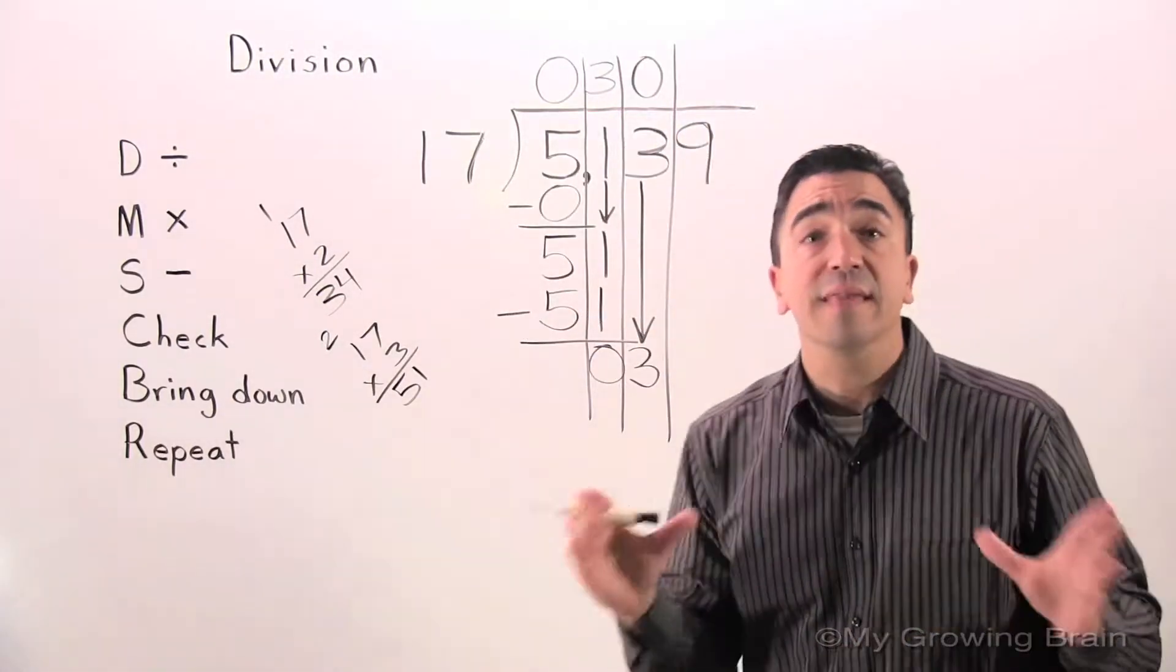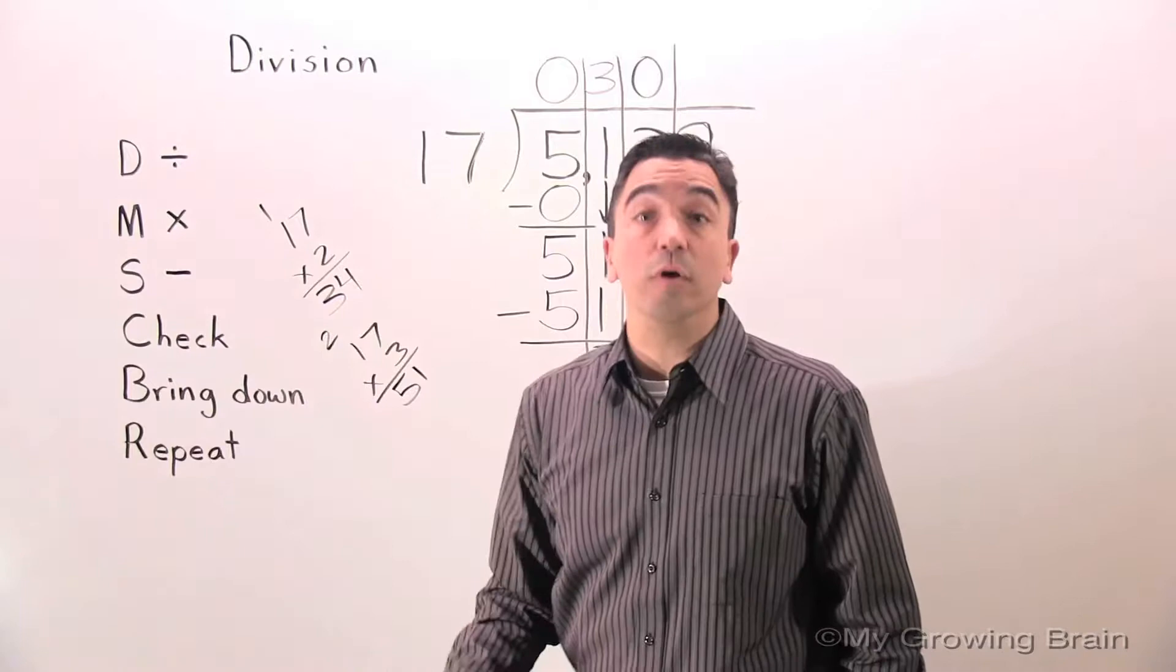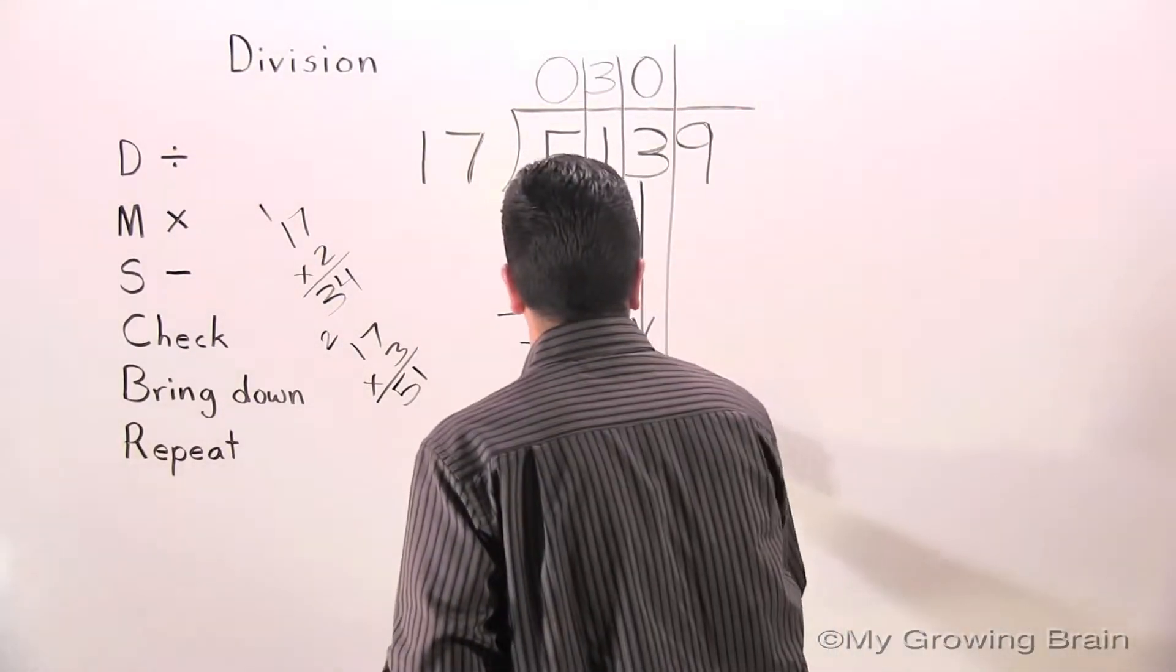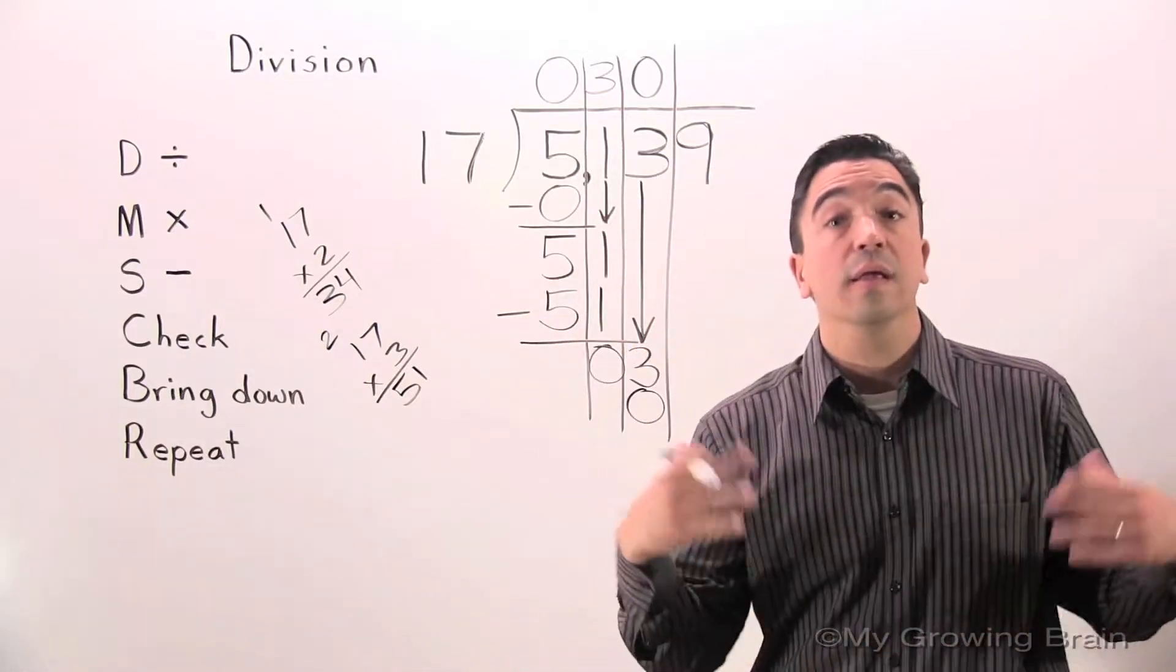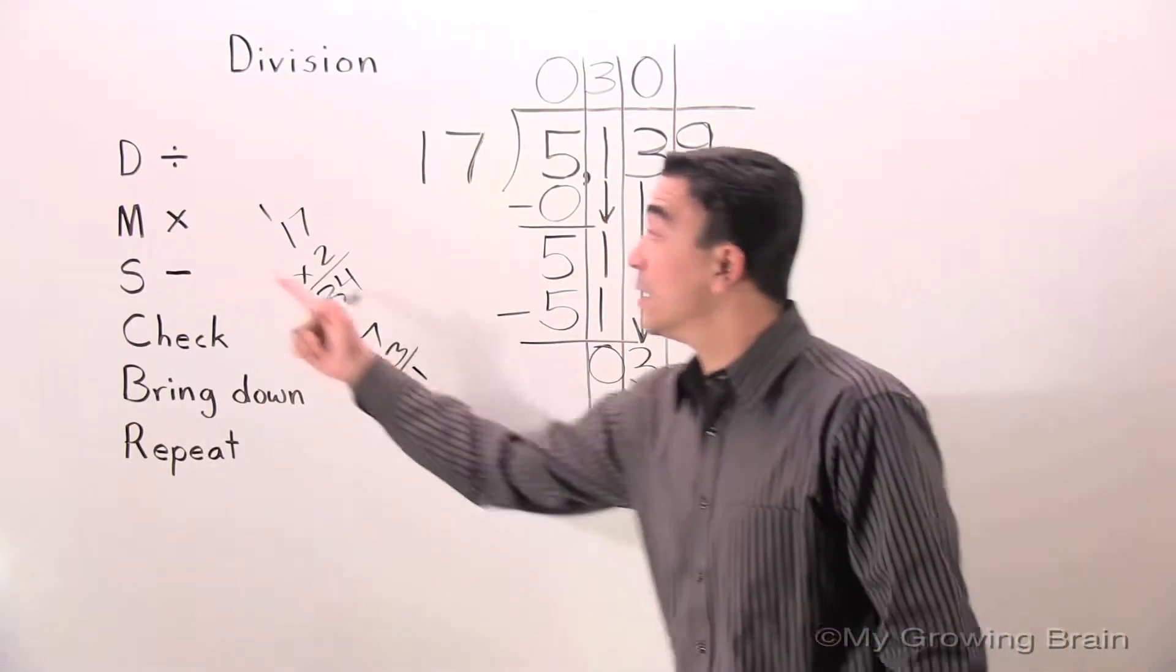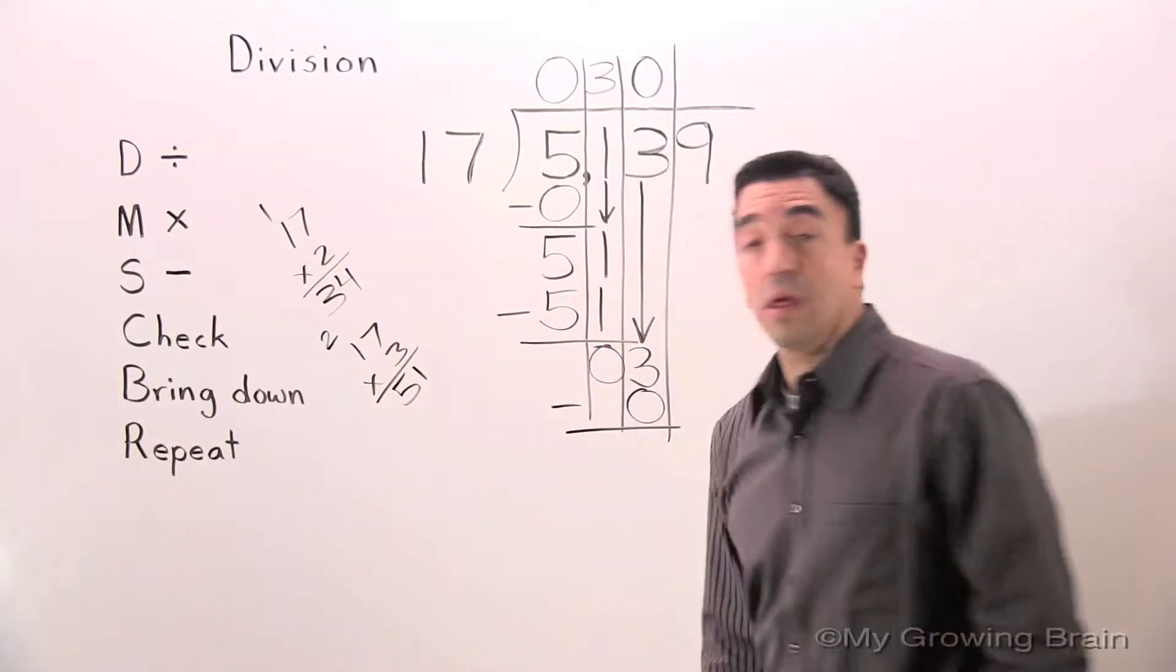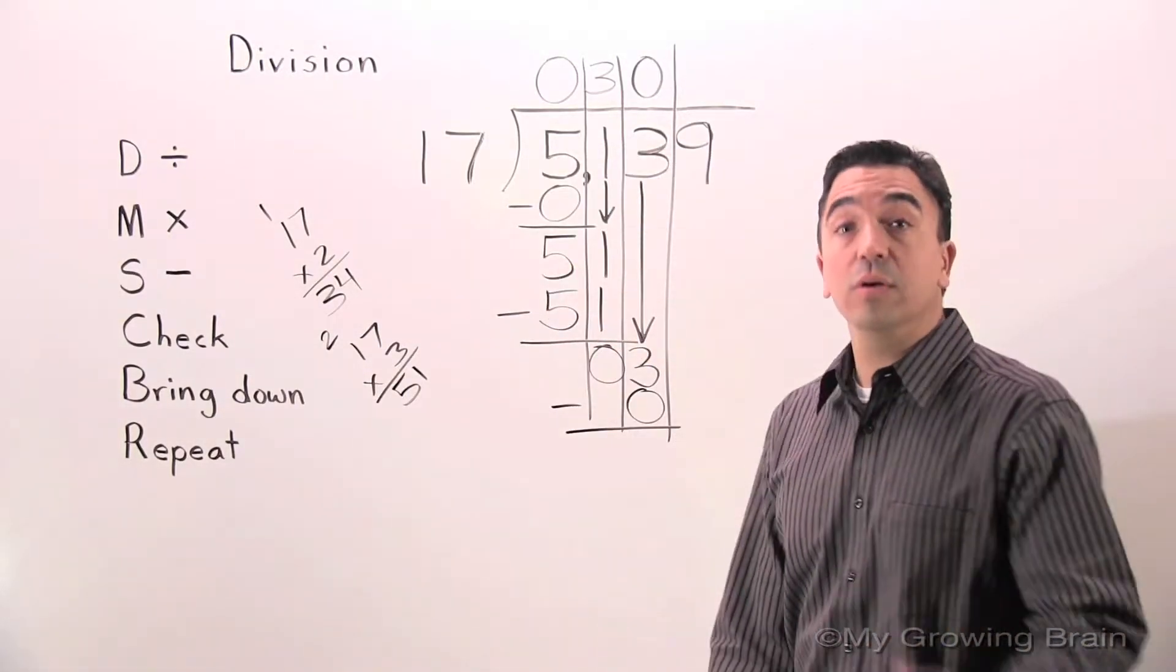Okay. Next step, multiply. 17 times 0, 0. Next step, subtract. 3 minus 0, 3.